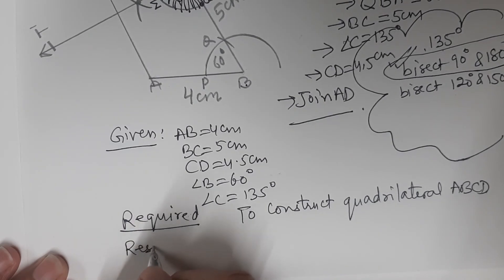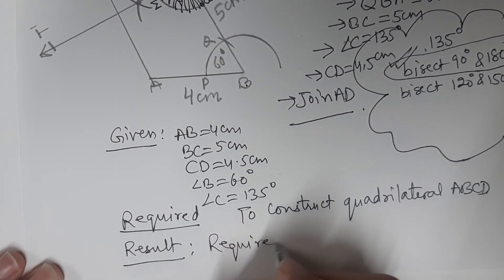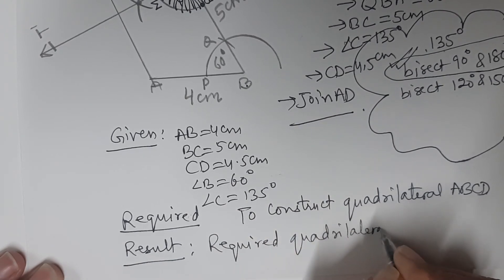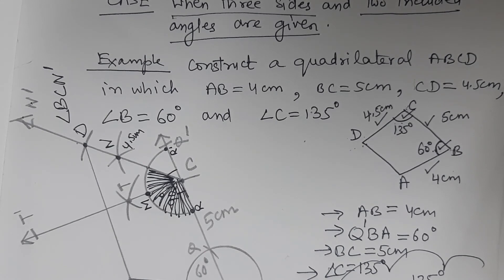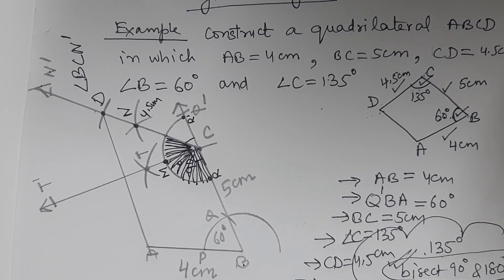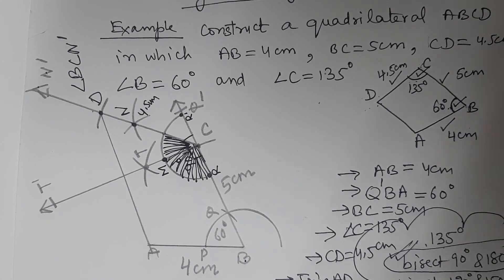After stating the given and required, draw and construct the figure, then write the result: required quadrilateral ABCD is constructed as per the dimensions. In construction questions, please be careful about neatness, labeling, putting arrows on rays, marking angles, and mentioning the alphabet wherever you draw an arc so the steps are easy to follow.